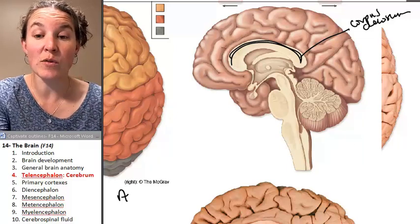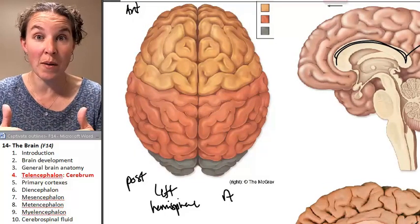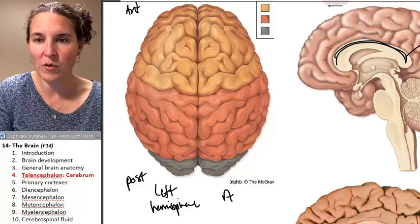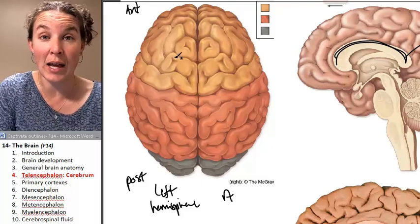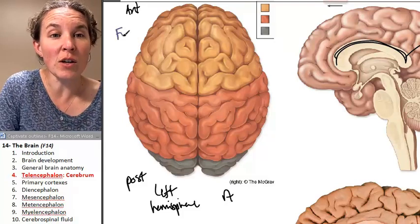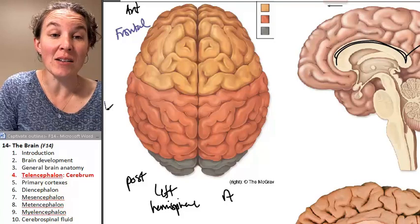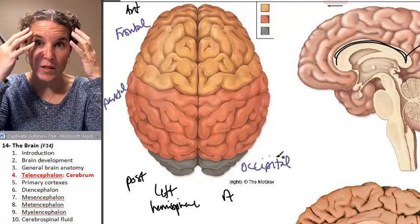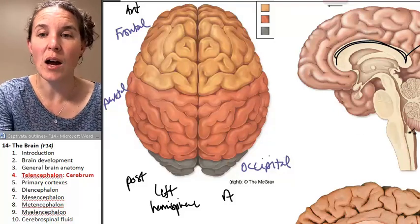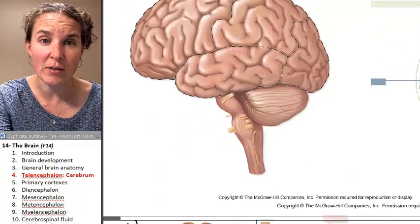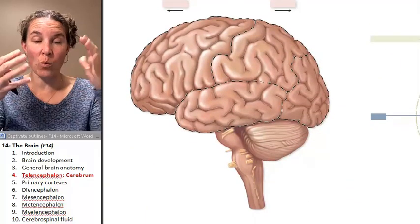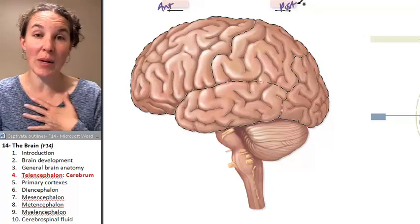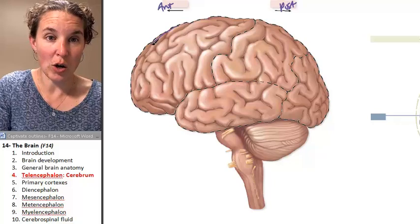The cerebrum also consists of lobes. You can actually see three of them from this superior view. Conveniently, you're probably a little bit comfortable with this already because we did this with the bone lab way back in the day. We have the frontal lobe, the parietal lobe, and the occipital lobe, and these are all visible from the superior surface. I'm going to talk about each of those lobes using a different picture. We're only seeing one side, but we still have our anterior and posterior views, and now we can see these lobes a little bit more clearly.